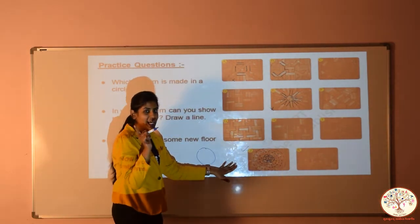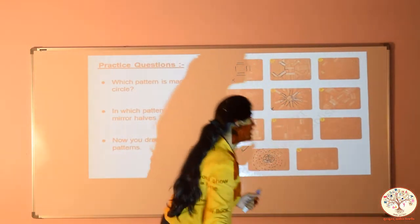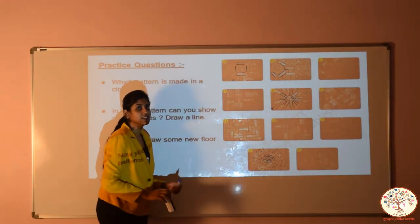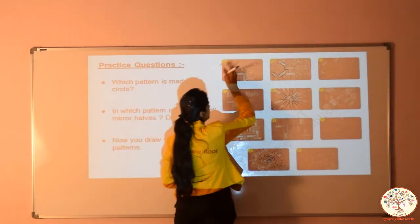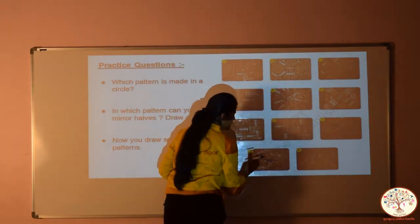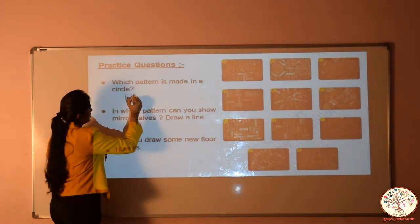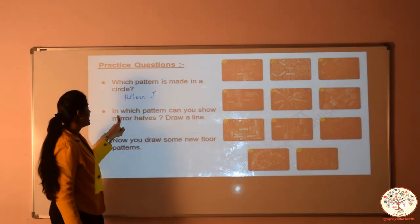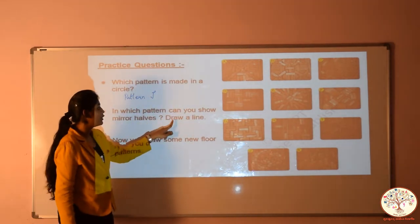So हमने shapes की बात की थी पहले video में — अब पता चला हमने shapes की बात क्यों की थी? क्योंकि हम patterns को भी check करेंगे कि वो किस shape में हैं. Pattern J is in a circle shape. Now let's check out the second question. Second question is: in which pattern can you show mirror halves? Draw a line. Mirror half — do you know what is mirror half?